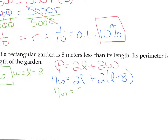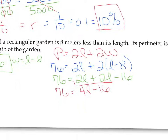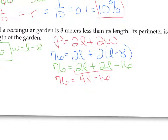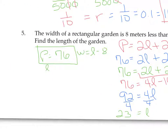We start simplifying the equation: distribute the 2, combine like terms. That makes 4L minus 16. Add 16 to both sides to get 92 equals 4L. Then divide both sides by 4. You end up with L equals 92 divided by 4, which is 23. So the length of the garden is 23 meters.